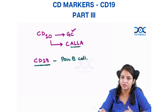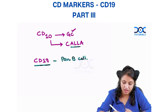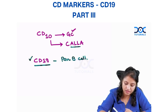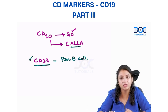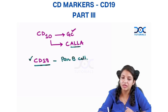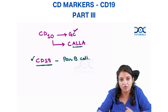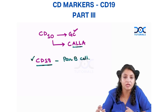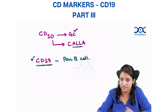Any number after this is a B cell marker. CD19 is the first marker to appear in the B cell. But if somebody asks you which is the other marker of B cell which has come up now and which is considered more specific —